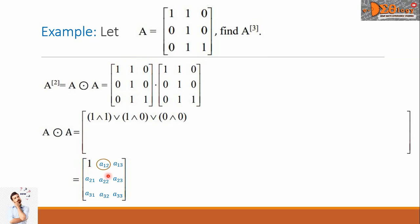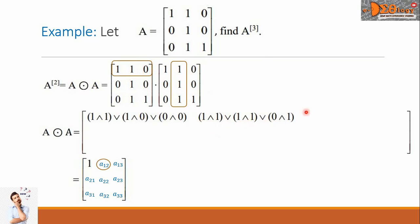Next, A sub 1,2. We use the first row and the second column of this matrix. So we write: (1 AND 1) OR (1 AND 1) OR (0 AND 1). Again, if any value of 1 appears, the full operation equals 1. 1 AND 1 is 1, 1 AND 1 is 1, 0 AND 1 is 0. We see a value of 1 in the pairs, so the full operation equals 1. That is the value of A sub 1,2.